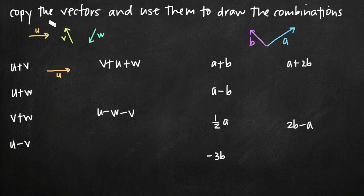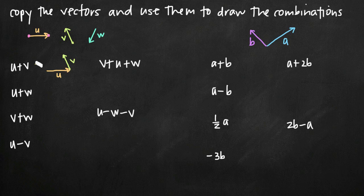Let's get our definitions right. The initial point is where the vector starts, and the terminal point is where the vector ends. When drawing v, I take the initial point of v and attach it to the terminal point of u, then copy v from there. From vector addition and the triangle law, u plus v is the vector that connects the initial point of u to the terminal point of v — from the very beginning to the very end.